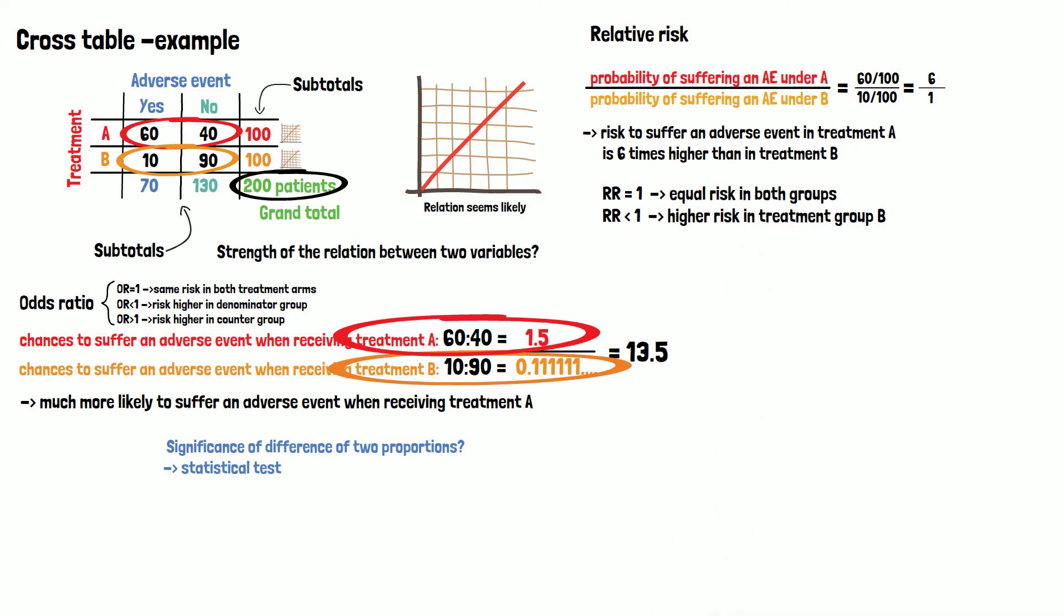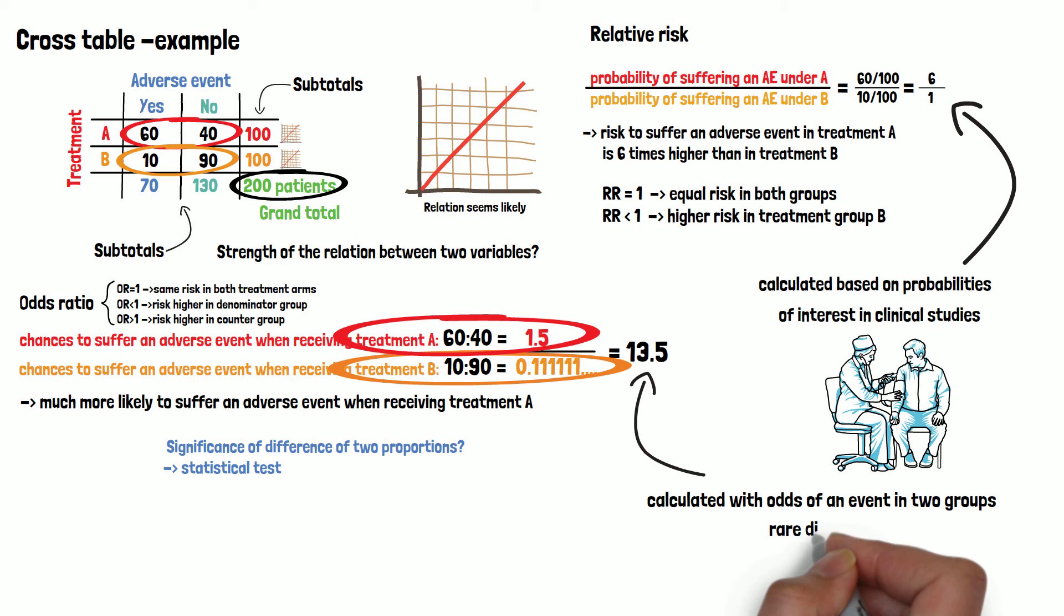The difference between odds ratio and relative risk is that the odds ratio is calculated with the odds of an event in the two groups, whereas the relative risk is calculated based on probabilities. The relative risk is usually the parameter of interest in clinical studies. When working with rare diseases though, the odds ratio is a good approximation to the relative risk.